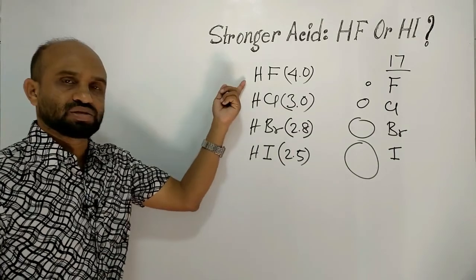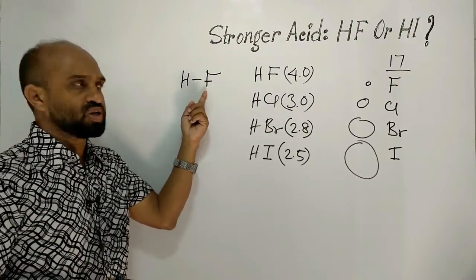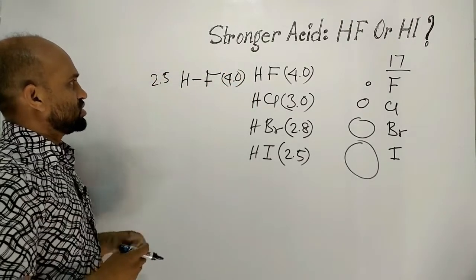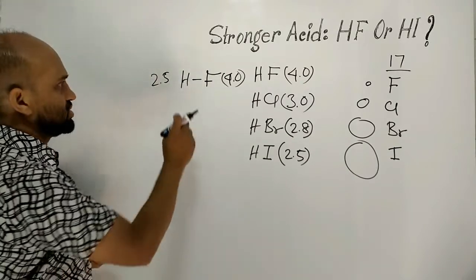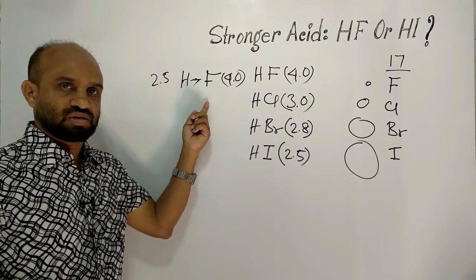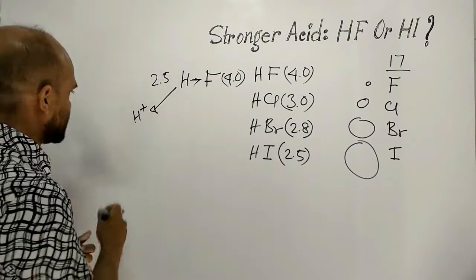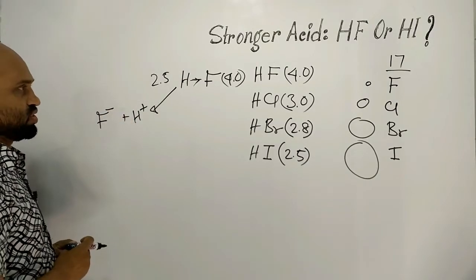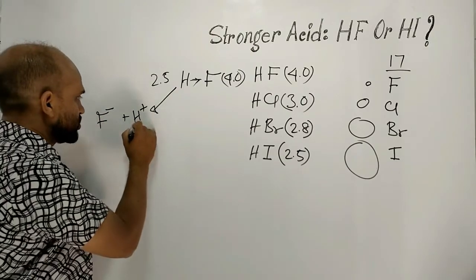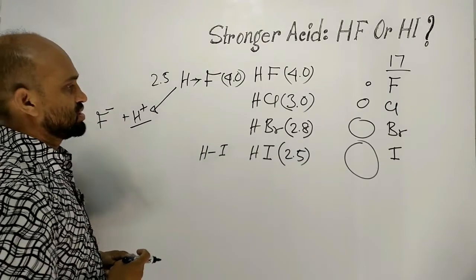Consider hydrofluoric acid. The electronegativity of fluorine is 4.0 and hydrogen is 2.5, giving a large electronegativity difference. This bond gets polarized and the covalently bonded electrons move towards fluorine. As a result, a scope is created to produce a proton from this compound, and a fluoride ion is formed. Because of the high electronegativity difference, a proton is supposed to form easily from this compound.